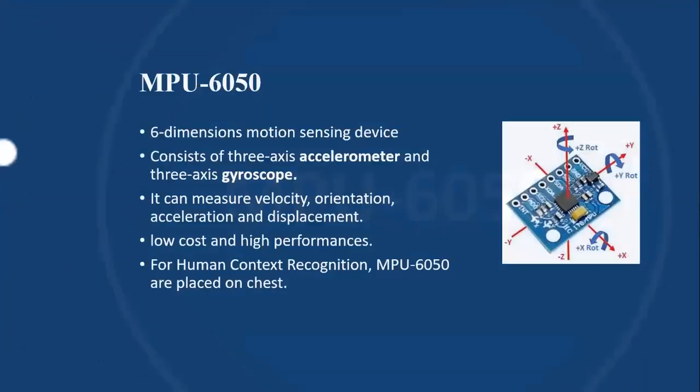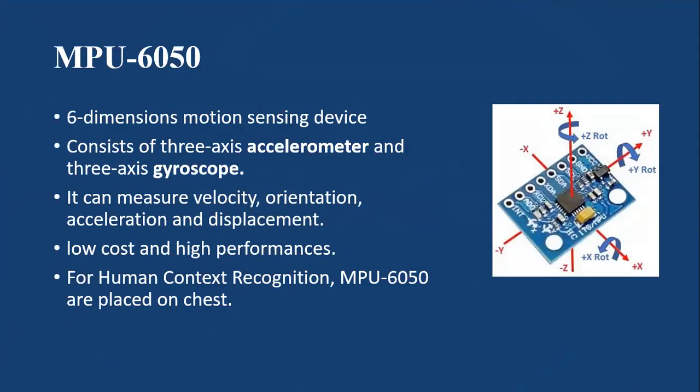MPU-6250 is a six dimension motion sensing device consisting of three axis accelerometer and three axis gyroscope. It can measure velocity, orientation, acceleration, and displacement. It is a low cost and high performance device. For human context recognition, MPU-6250 are used and placed on the chest of different subjects.